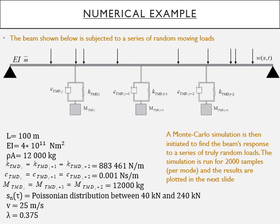Its density multiplied by the cross-sectional area which gives us the generalized mass is 12,000 kilograms. Each of the TMD springs are identical at 883,461 Newton meters.